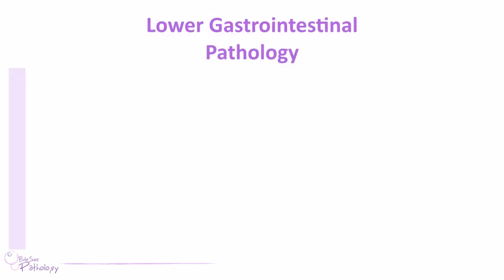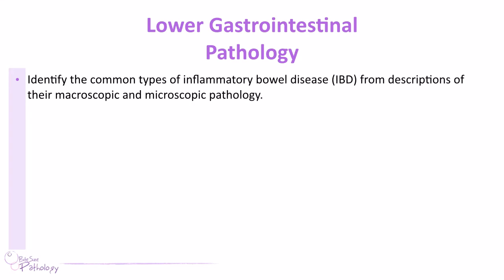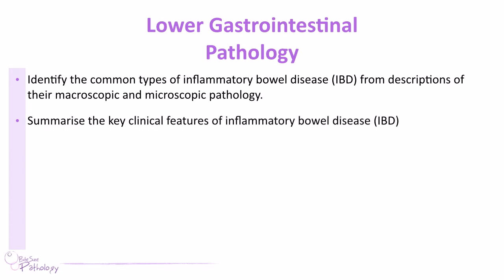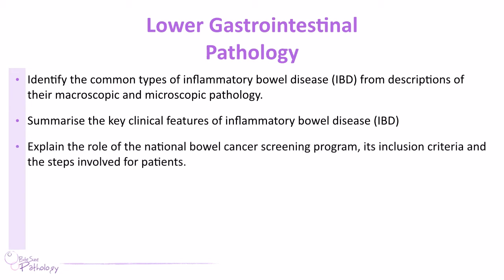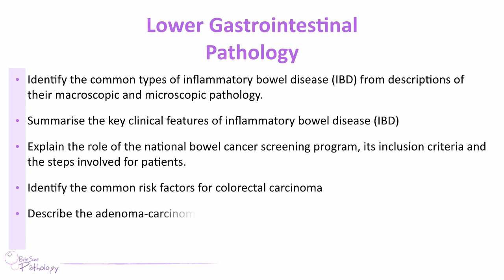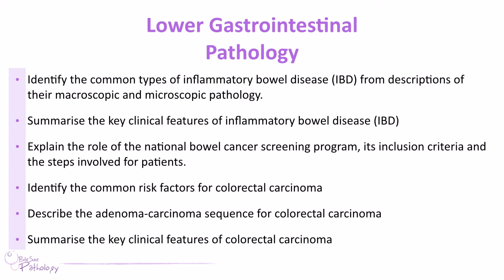To summarise what we've looked at today: the common types of inflammatory bowel disease with their microscopic and macroscopic pathology; key clinical features of IBD; the National Bowel Cancer Screening Programme; risk factors for colorectal cancer and the adenoma-carcinoma sequence; and how tumour site affects clinical presentation. Please feel free to ask questions and leave comments below, and tweet us and hit the subscribe button. We'll be back with our next instalment, which will be renal pathology.